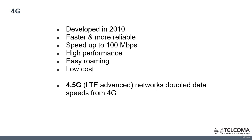4G was developed in 2010. It offered faster and more reliable services, and the speed increased to around 100 megabits per second. It offered high performance and easy roaming at low cost. Then we have 4.5G, or LTE Advanced networks, which doubled the data speeds from 4G, increasing them to even bigger numbers.